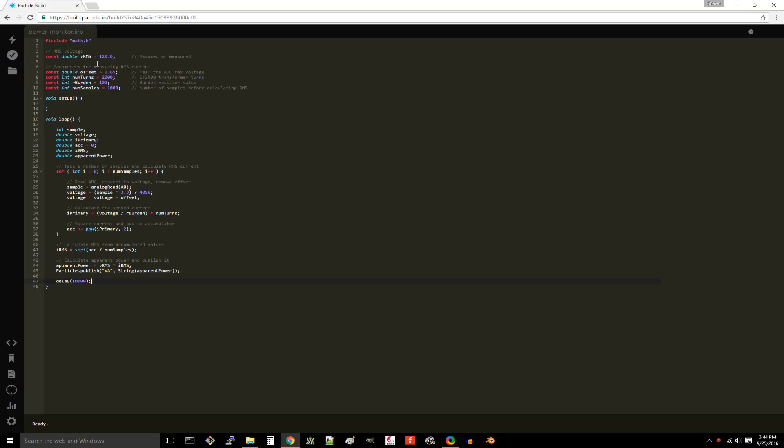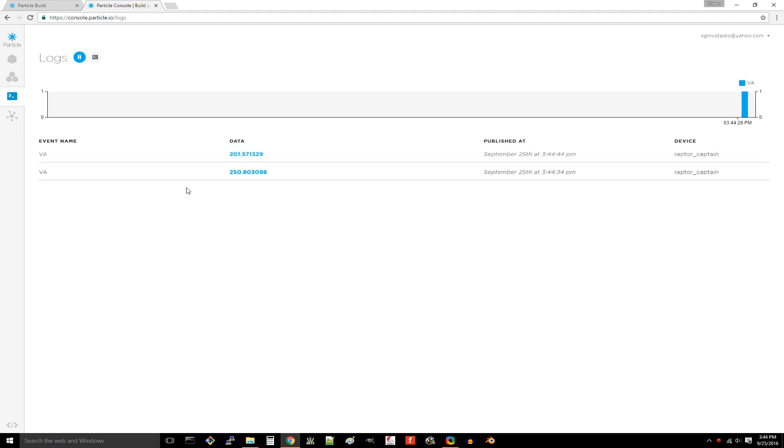As an example, I connected my desktop to the extension cord so we can measure how much power it's actually using. Let's turn it on and take a look. Head to console.particle.io, click on logs, and you should see the published events start rolling in with the amount of power being used with volt amps as the unit. You might notice that volt amps seems a little weird as most of the time power is expressed in watts. That's because volt amps are used for apparent power and watts are used for real power.